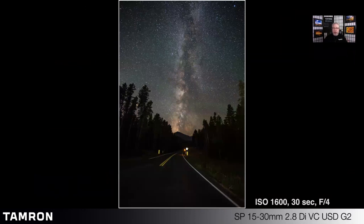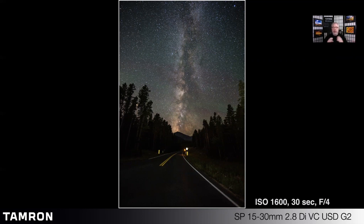Sometimes you need a large aperture simply to let a large volume of light in, in low light situations, such as this night sky photo, where a fast lens of f4 or faster is going to be very beneficial for low light photography.